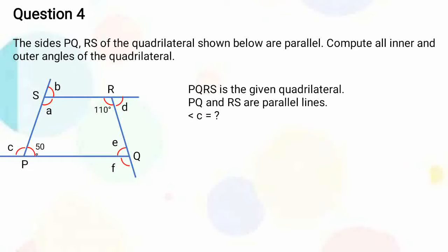What is angle C? Angle C is equal to 180 degrees minus 50 degrees, since it is a linear pair. That is equal to 130 degrees.